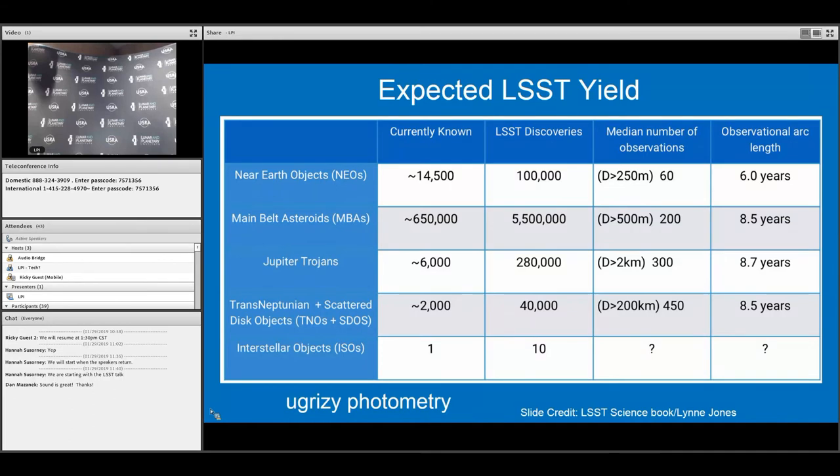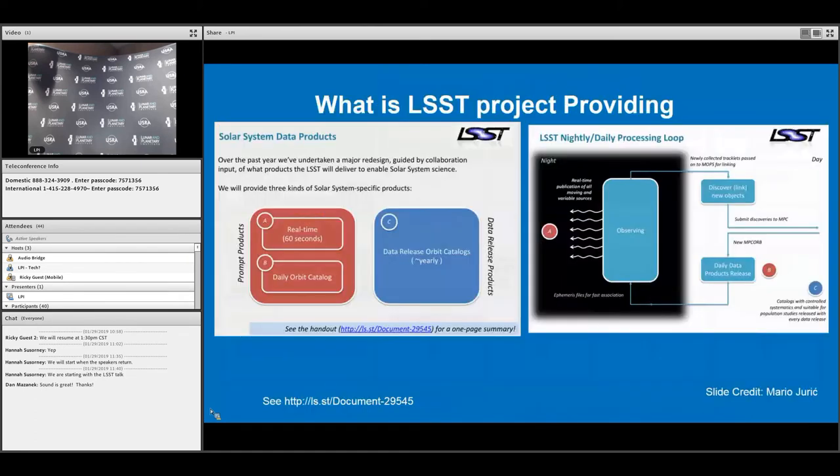We'll be getting light curves, average colors, and dynamical properties. For interstellar objects, there will be one a year as a pessimistic estimate for LSST to find. It's going to 24.5 magnitude, so we should be able to detect these things sooner than when Oumuamua was discovered by PanSTARRS.